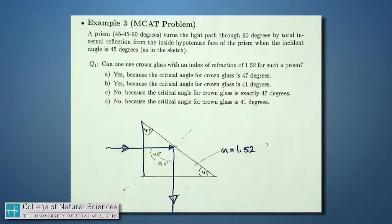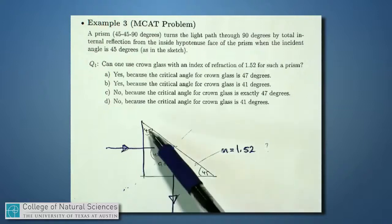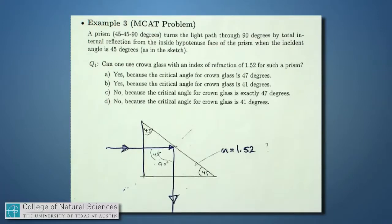Total internal reflection from the inside hypotenuse of the prism when the light is at 45 degrees. So the question is, can you use a material, and in particular, can you use crown glass which has an index of refraction of 1.52 for such a prism? And there's a bunch of choices there.